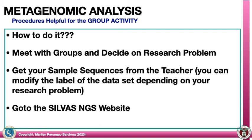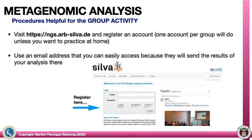First, meet with your groups and decide on a research problem. Then access the sample sequences from the teacher. You can modify the label of the data — say, morning socks or evening socks. Then go to the SILVA NGS website at https://ngs.arb-silva.de and register for an account. Register one account per group, unless you want to practice at home individually. Use an email address you can easily access because they will send the results of the analysis there. You just copy and paste the sequences I will give you, and they will send you the results via email.